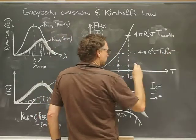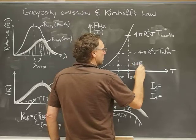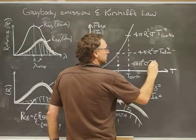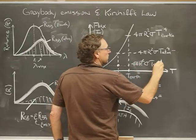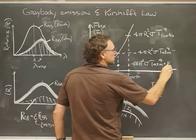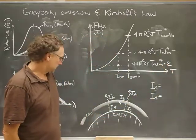Of course, we would write I5 as something like this. We would say it could be 4 pi r squared sigma T atmosphere to the fourth times epsilon.